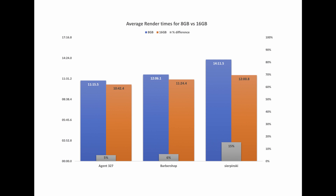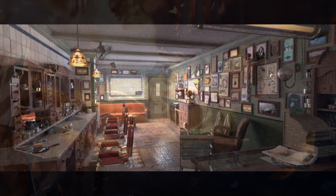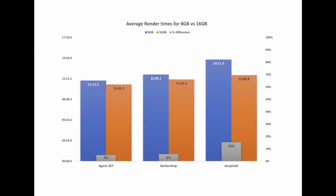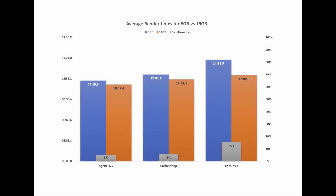You can see there is actually a consistent reduction in render times, although for some of the scenes it's not as great as you might have liked. For the Agent 327 scene and the Barbershop interior scene we only really see a reduction in render time of about 6% on average. The story is a little bit different for the Sierpinski city scene — in this case we see a reduction in render time of about 15%, which is three times larger than for the other two scenes.